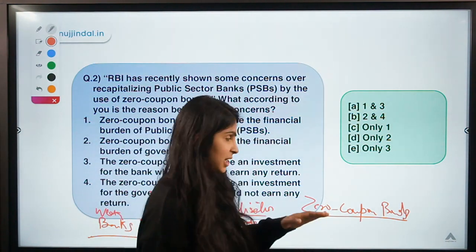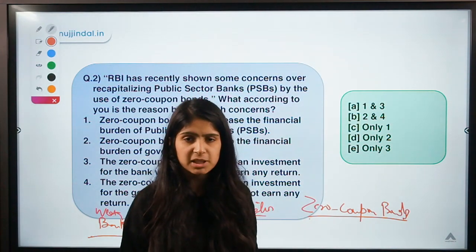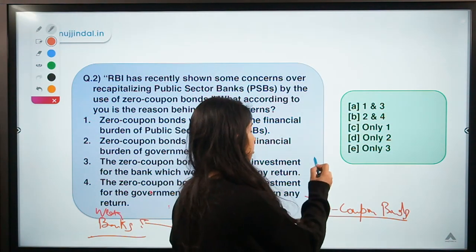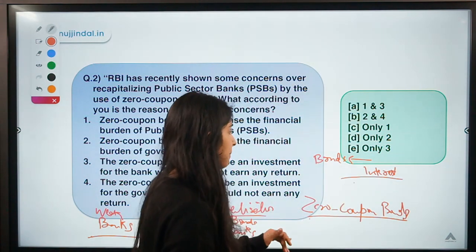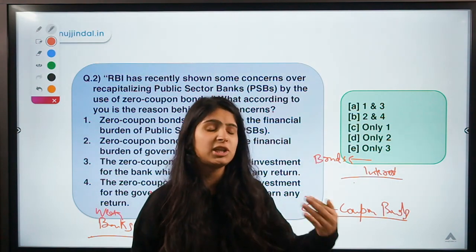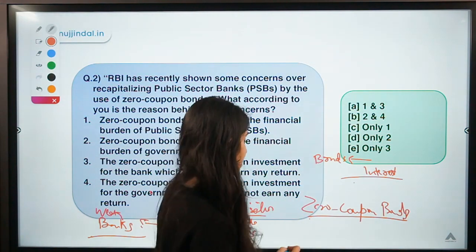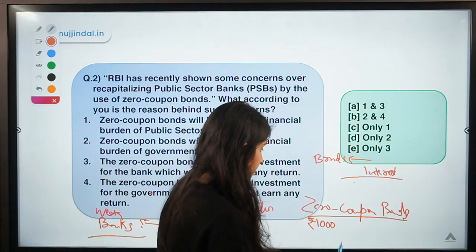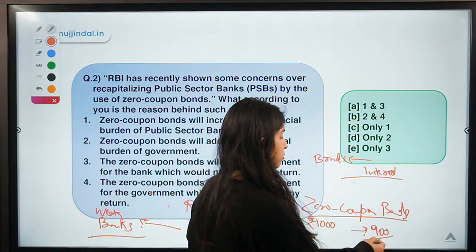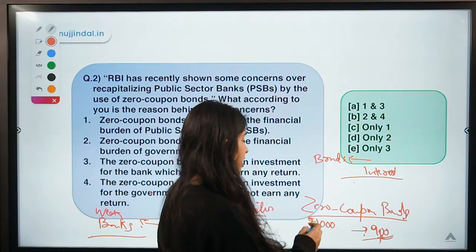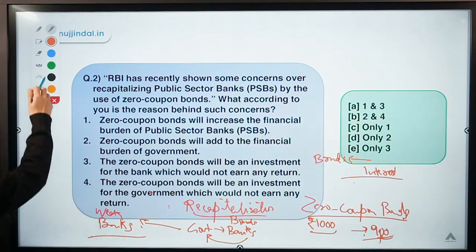Zero coupon bonds provide no interest. Usually when an entity issues bonds it provides some interest to investors, but in zero coupon bonds the bonds are issued at a discounted price and redeemed at face value. For example, a bond worth rupees 1000 might be issued at 900; you pay 900 and after six months get back 1000, earning 100 rupees. No explicit interest is paid, but you gain from the discount.